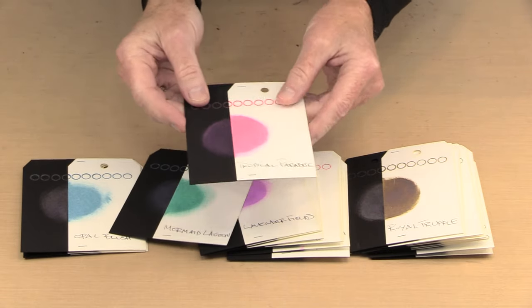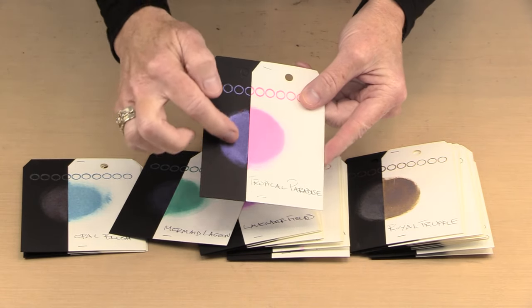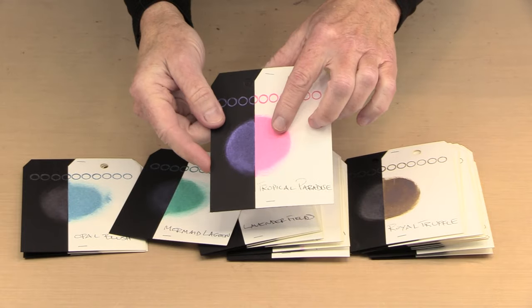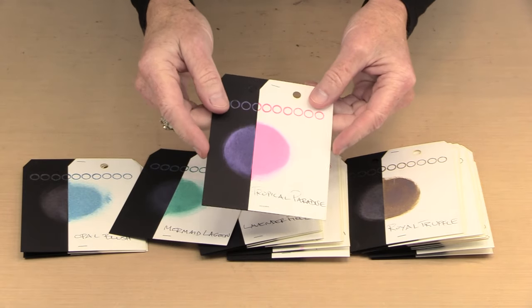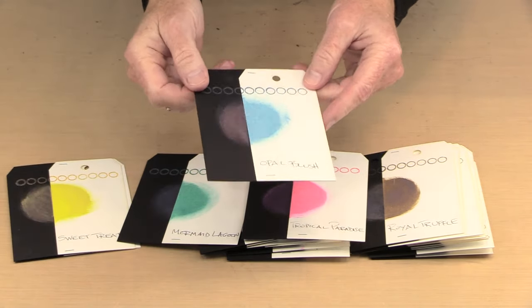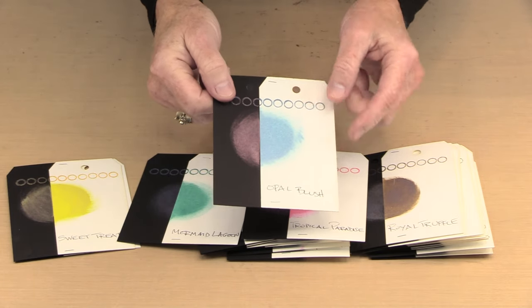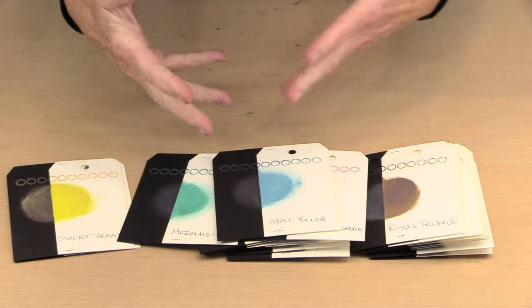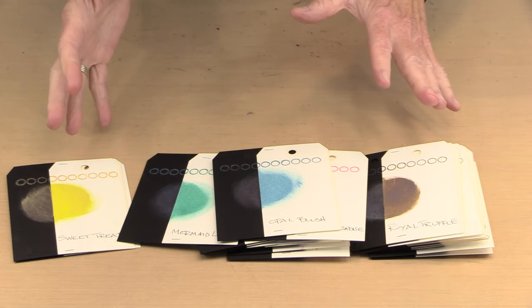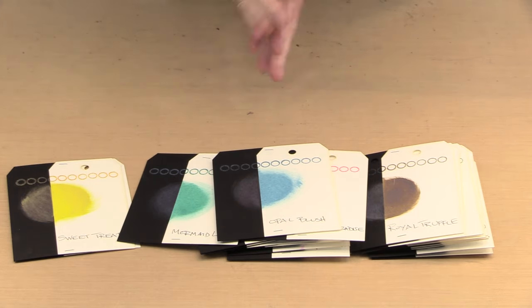For example, this is Tropical Paradise. When you look at it, it's quite purple here on the black but when you look at it on the white it's very obviously pink. When you look at Opal Blush, you can see you've got this kind of pinky purpley color going on here and you've got blue. So these are a great reference. I take the time to make them. I come back and I use them quite often.